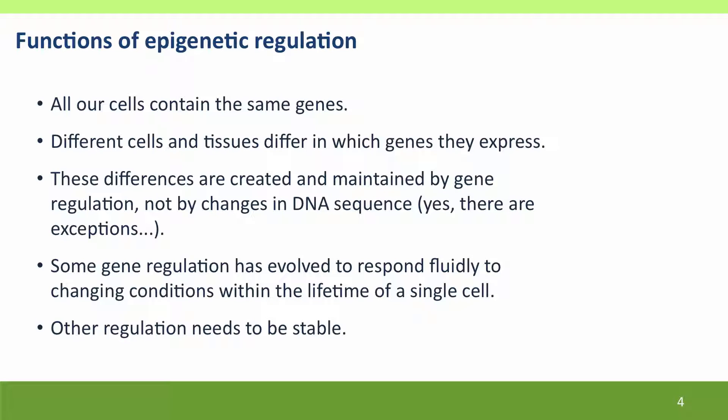We need stable, heritable forms of gene regulation because many of our cells need to acquire differentiated phenotypes that are going to remain stable over multiple generations. Some of the kinds of regulation we've been thinking about — repressors or activators binding to promoters — are fluid responses that can change within the lifetime of a cell. But now we're thinking about regulation that persists longer than a cell's lifetime, and once established is fairly stable, only undone under special circumstances.